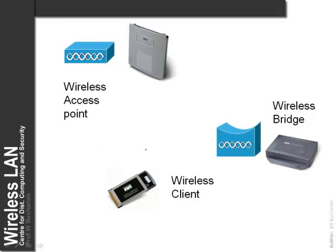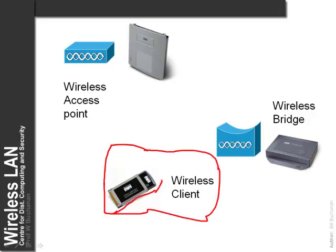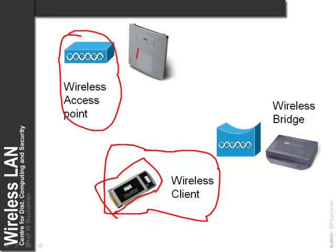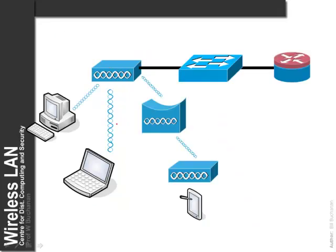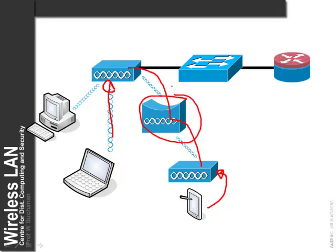What are the building blocks that we actually have? We have typically a wireless client — in this case it is an interface that we plug into either a network card or into a notebook. We have a wireless access point, in this case a Cisco 1200 device, and we can also have a wireless bridge. Basically we connect to a wireless access point and if we need to bridge between two wireless domains we can use a wireless bridge, along with a switch.